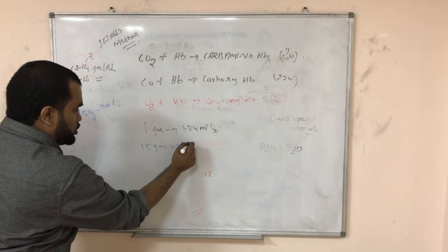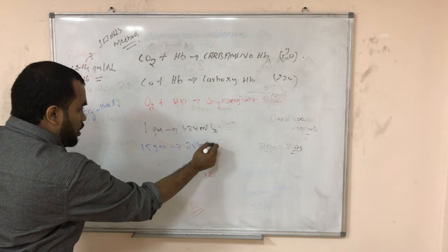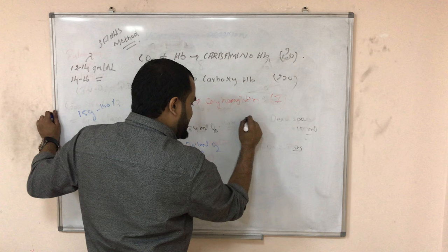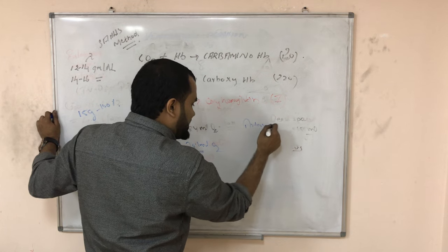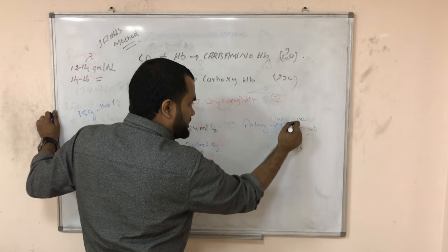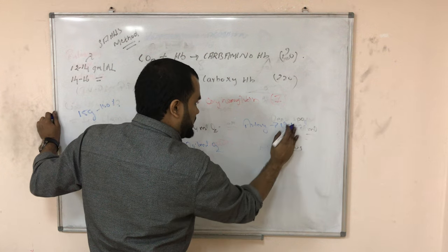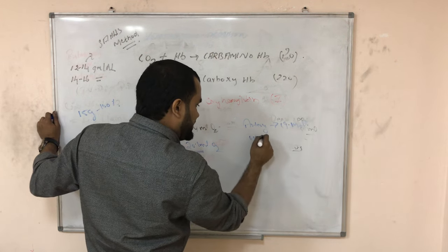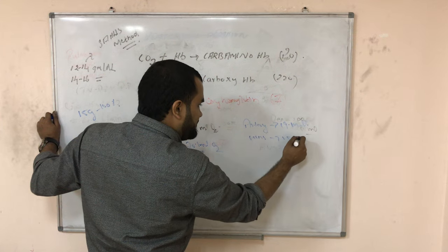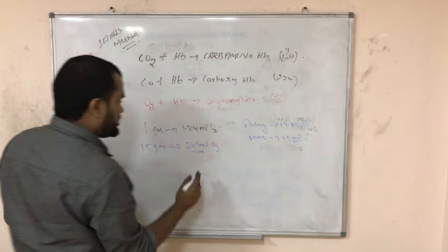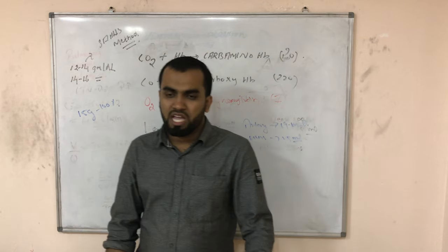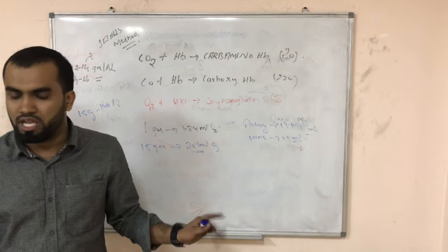Do really our arteries carry 20 ml? No. Arteries only carry 19.4 ml, around 19 ml. And veins carry only 15 ml. There is a 5 ml difference. So it means saturation is never 100%. It is only maximum 97%.